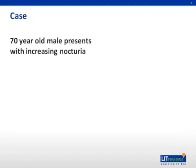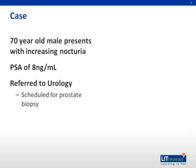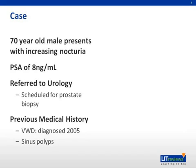This case is of a 70-year-old gentleman who presents with increasing nocturia to his primary care physician. The primary care physician orders a PSA, which is elevated, and the patient is referred to urology for a scheduled prostate biopsy. Prior to the biopsy, a pre-procedure workup reveals a previous medical history of von Willebrand's disease, which was diagnosed in 2005.